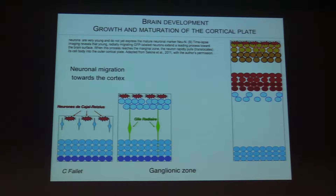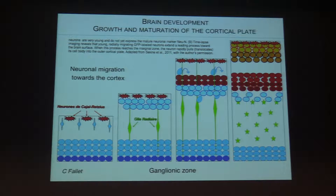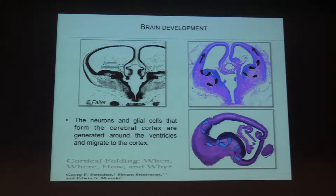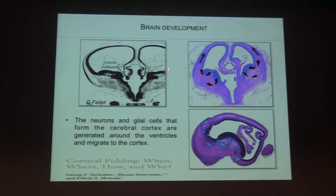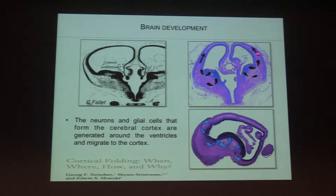When you have anomalies in these genes, you will have anomalies at these different steps. On this histologic view, the periventricular zone is in the middle, symmetric, and is the reserve of cells — a specific zone. After that, all the cells migrate toward the cortical brain and will develop the different sulci.